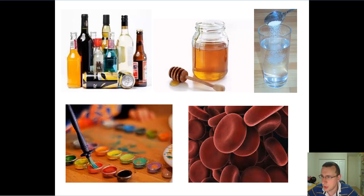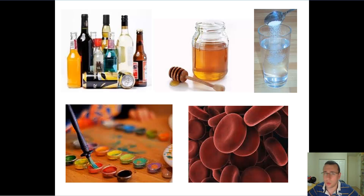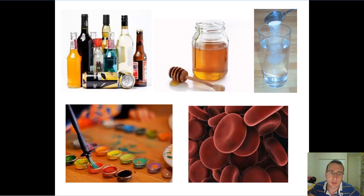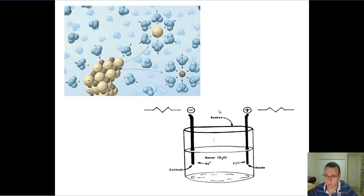There are two types of solutions that matter for biology. The first is an aqueous solution — like honey, blood, or sugar in water — where water is the solvent doing the dissolving. You also have tinctures, which are solutions based on alcohol instead of water. 'Tincture' relates to the word for ink or paint, and examples include beer, liquor, or ink.